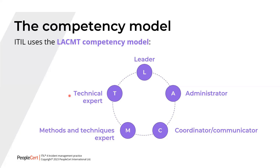These roles are described in the context of processes and activities, and each role is characterized with a competency profile based on the LACMT competency model. A role may require multiple competencies, and the model lists them in order of importance — most important first, less important later. For example, an LCT profile means Leadership is the most important competency and Technical expertise is the least important. However, all three codes — L, C, and T — are important, while A and M are not required for that particular role. The model helps understand high-level requirements of candidates to plan their professional development and form effective teams.